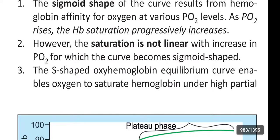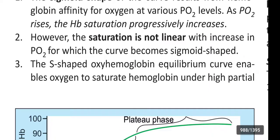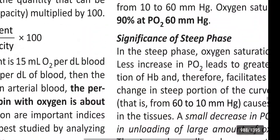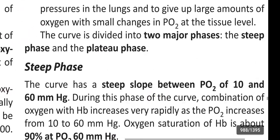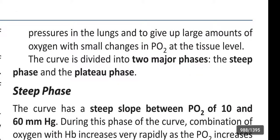The S-shaped Oxyhemoglobin Equilibrium Curve enables oxygen to saturate hemoglobin under high partial pressures in the lung and to give up large amounts of oxygen with small changes in partial pressure of oxygen at the tissue level. The curve is divided into two major phases: the steep phase and the plateau phase.